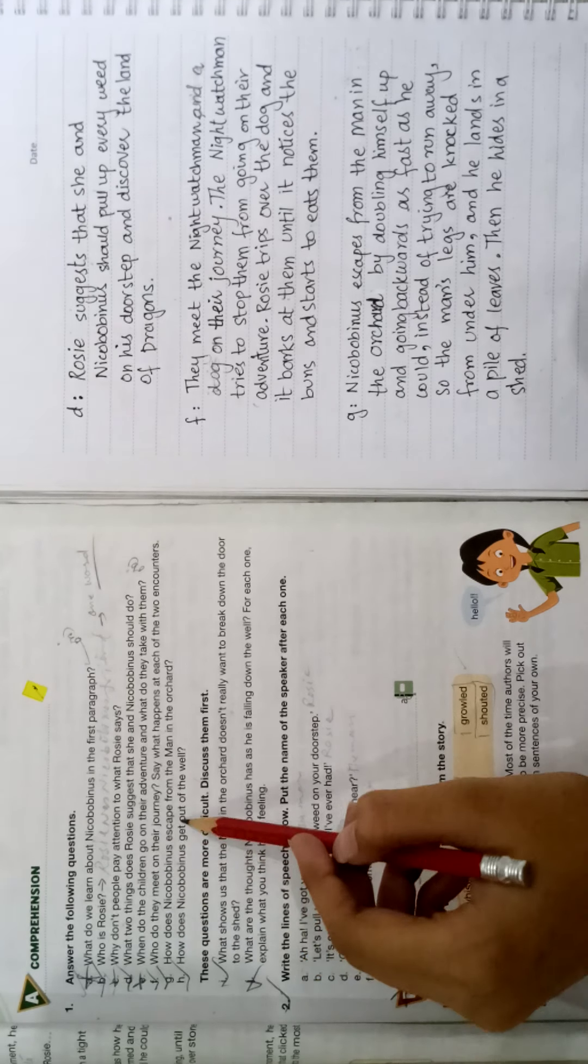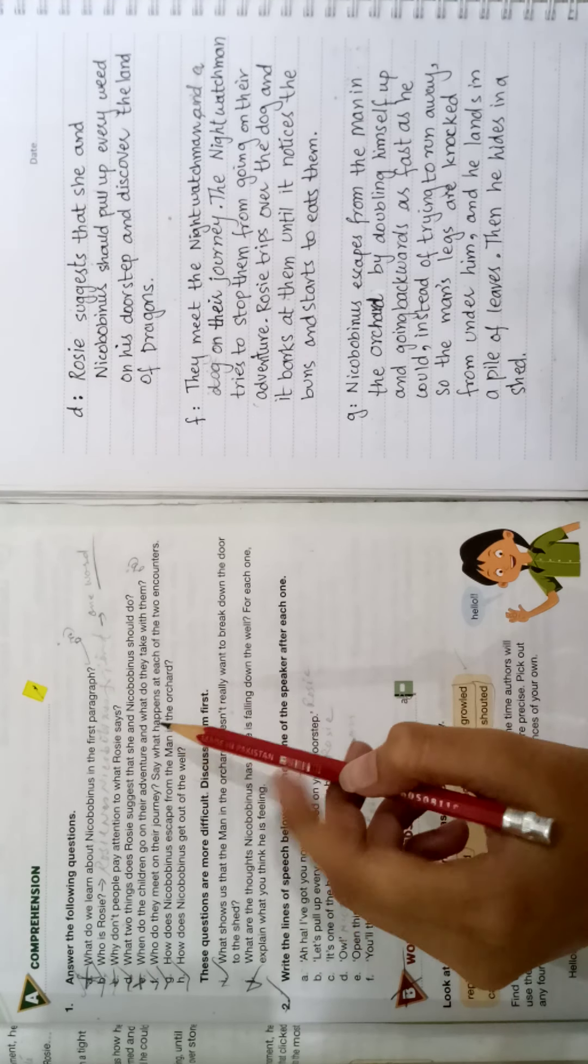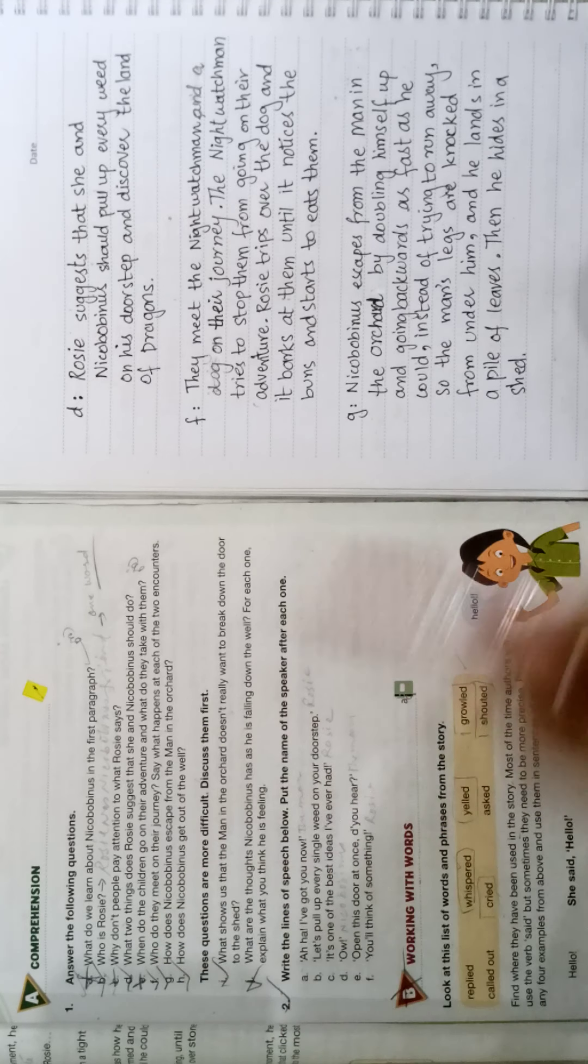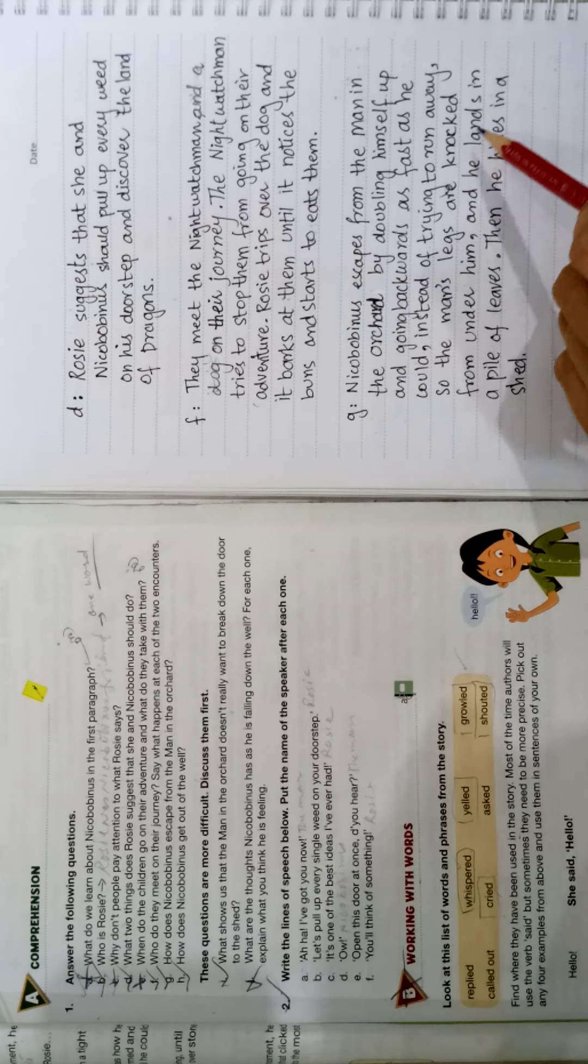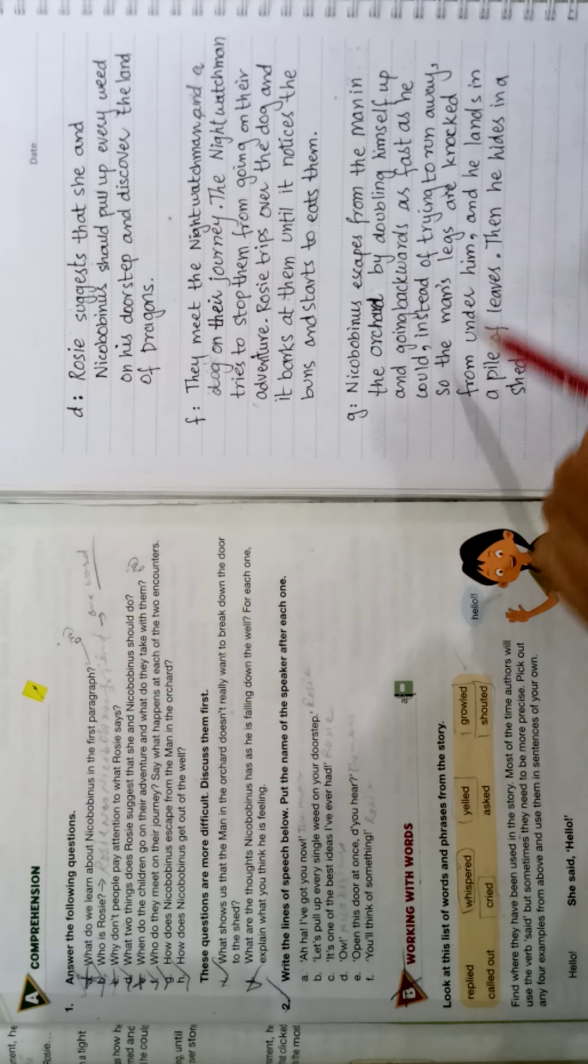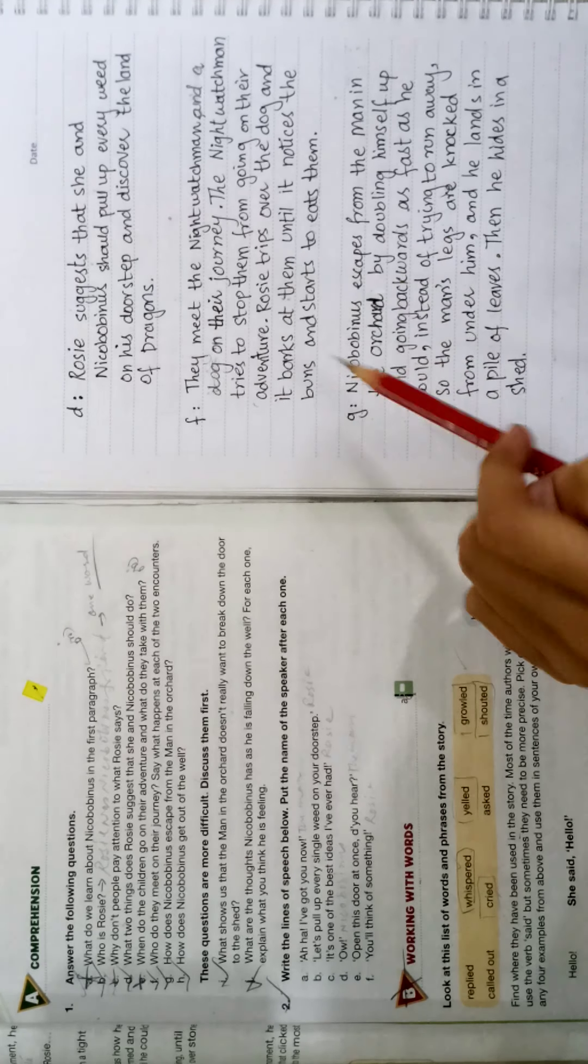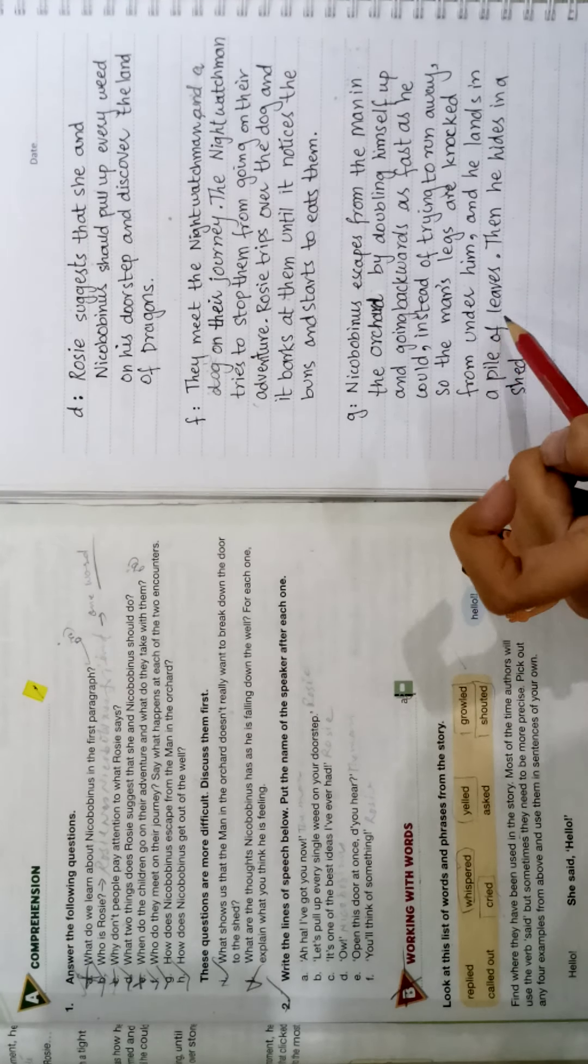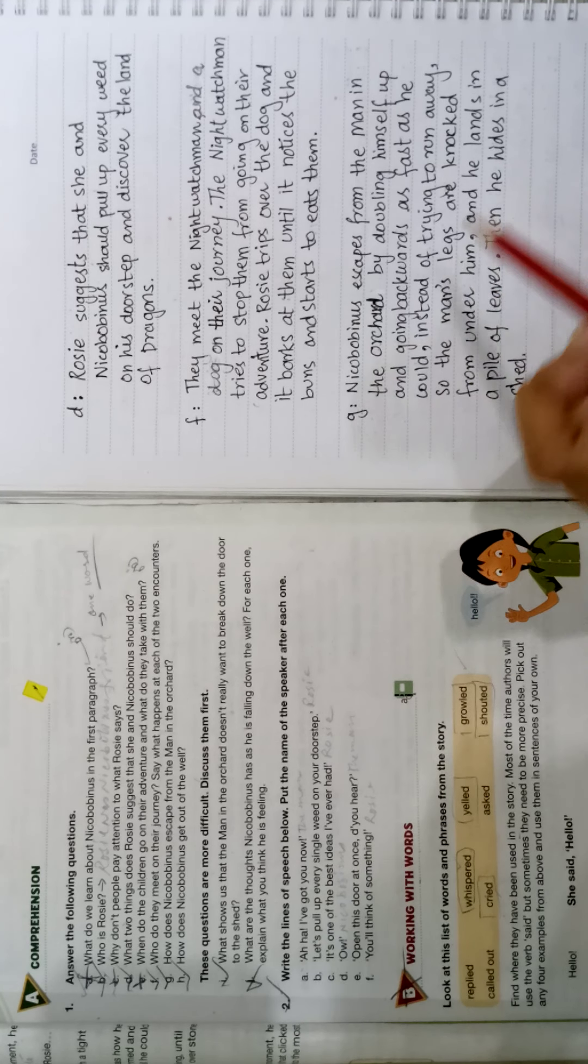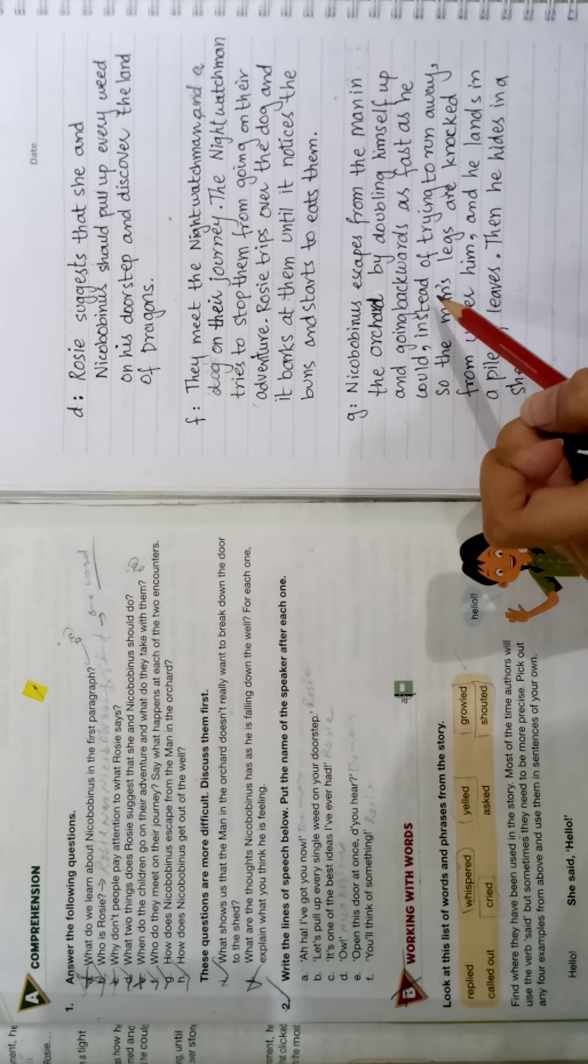Our last question is: how does Nicobobinus escape from the man in the orchard? The man in the orchard: how did Nicobobinus escape from the man in the orchard by doubling himself up and going backwards as fast as he could instead of trying to run away, so the man's legs are knocked from under him and he lands in a pile of leaves, then he hides in a shed.